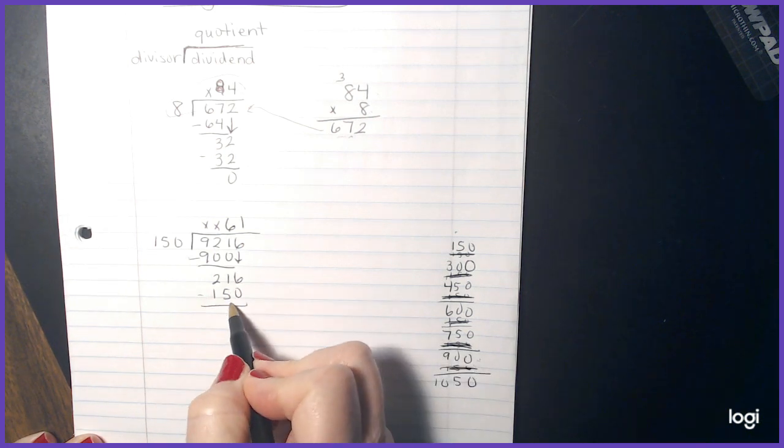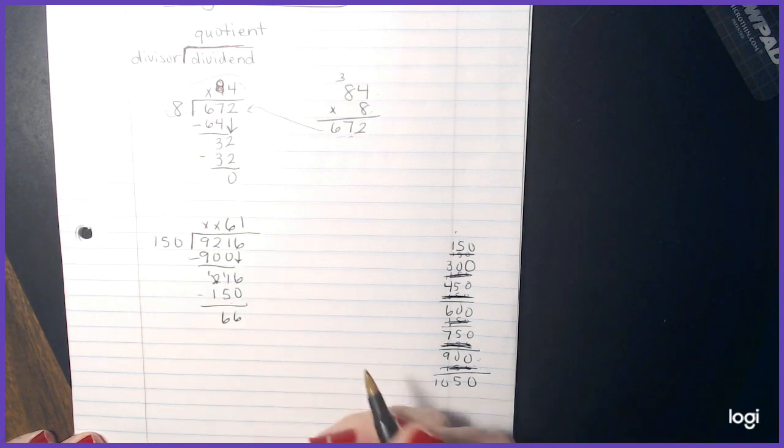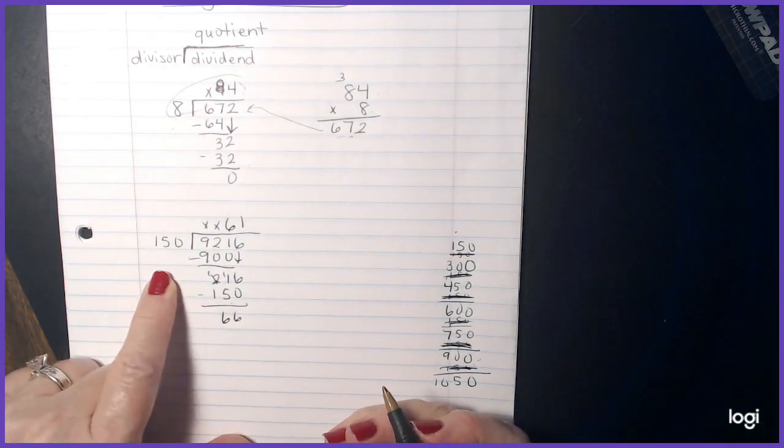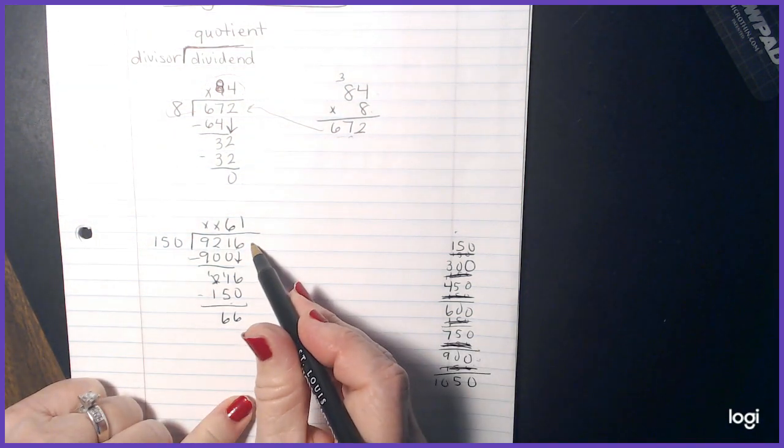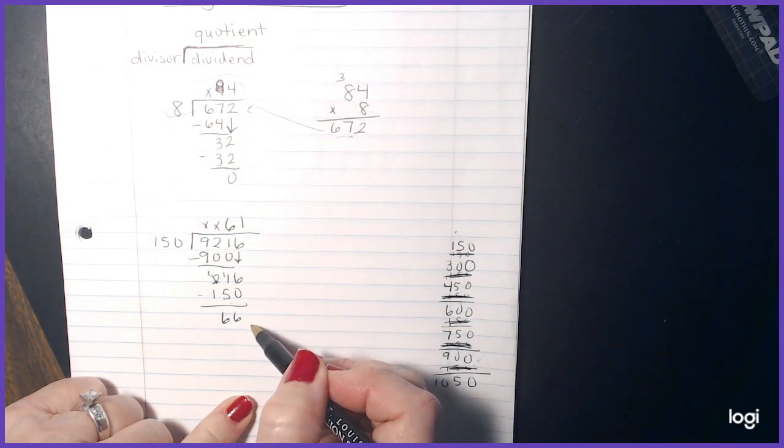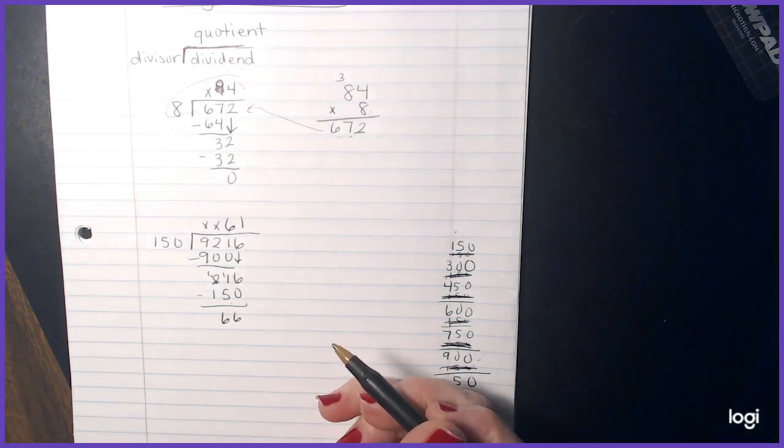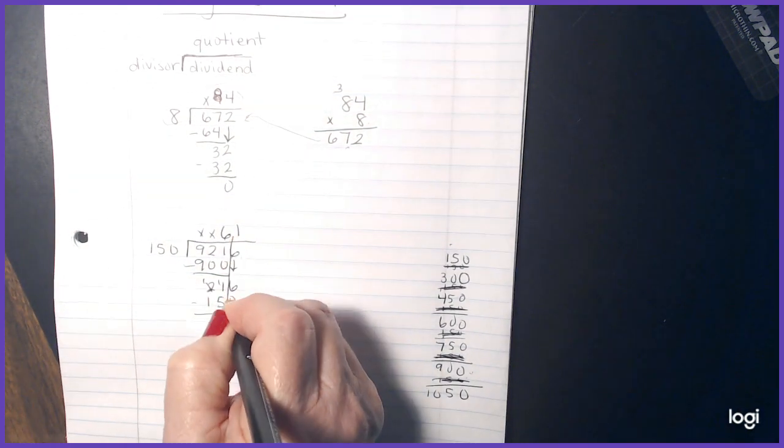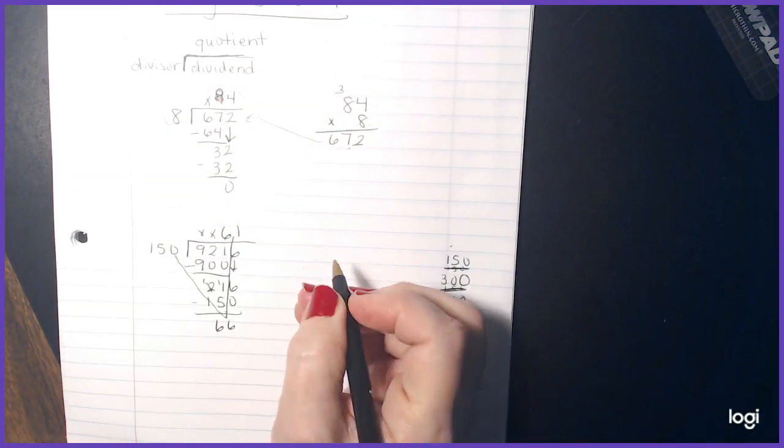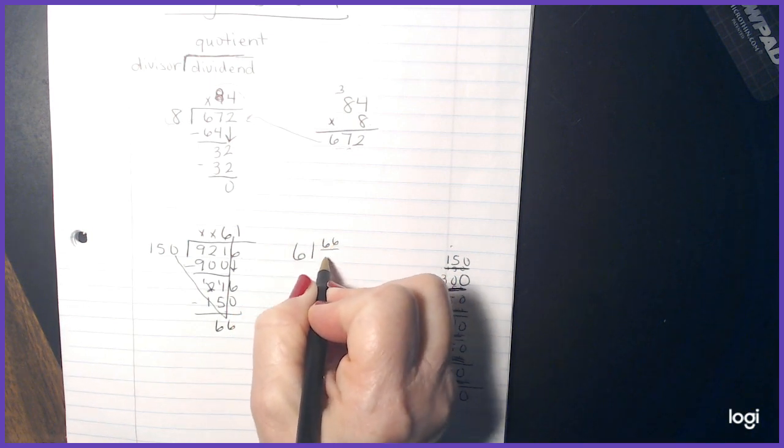So my answer down here is smaller than my divisor. So I'm good. I don't have any other numbers to bring down. Sometimes we'll add a decimal to add zeros. But for today, we're going to make it a mixed number. Our mixed number will be 61 and 66 over 150.